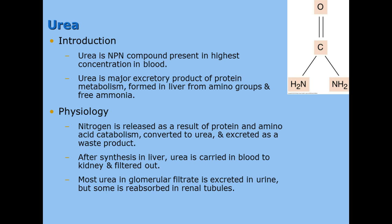After synthesis in the liver, urea is carried in the blood to the kidneys and filtered out. In essence, when you eat something protein-related like a steak, your intestines break it down into amino acids. Those amino acids make it to your liver where they are stored or turned into something else. Once they are used up or there are too many, the amino groups break off and are packaged into urea in your liver.